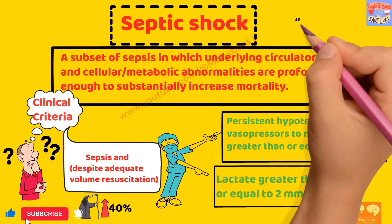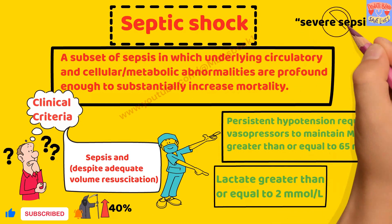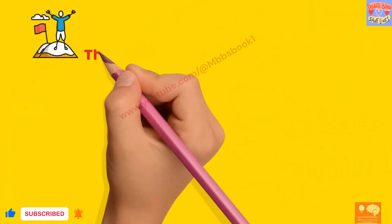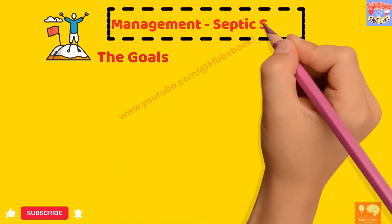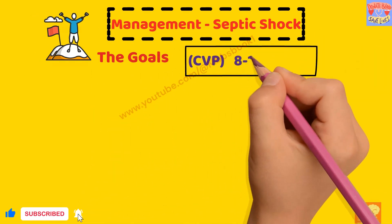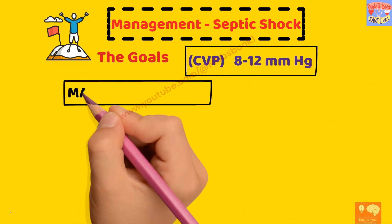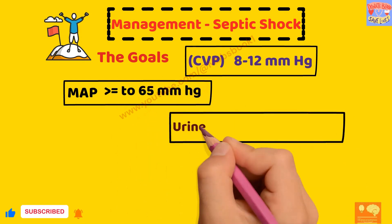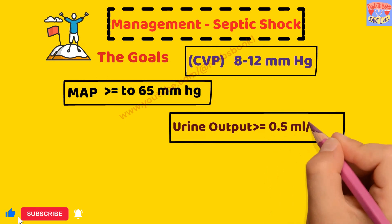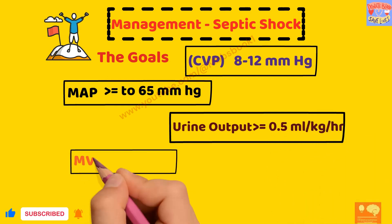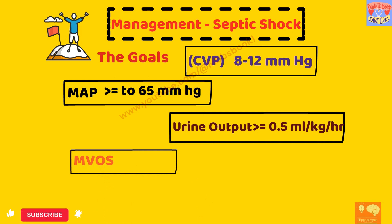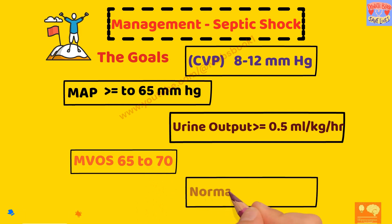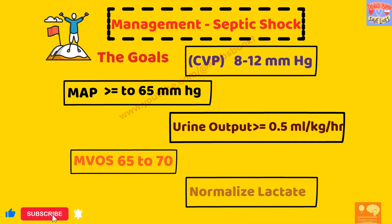One important thing to remember: the term severe sepsis is no longer in use. For a patient with sepsis undergoing resuscitation, the goals to achieve are: CVP of 8 to 12 mmHg, mean arterial pressure more than or equal to 65 mmHg, urine output more than or equal to 0.5 ml per kg per hour, mixed venous oxygen saturation (MvO2) between 65 to 70%, and normalization of lactate.